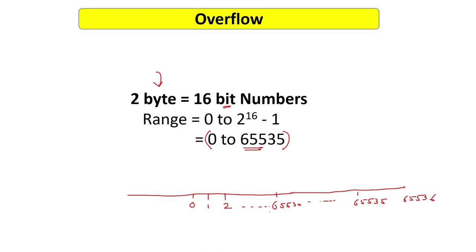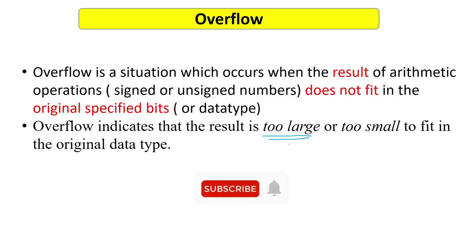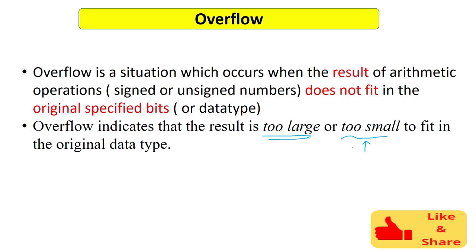The moral is: adding two large unsigned numbers can produce overflow if the result exceeds the representable range. For example, 65535 + 65534 overflows the 16-bit range. But 1+2=3 fits fine. The result being 'too large' is the overflow concept for unsigned numbers. The 'too small' concept applies to signed numbers, which will be covered in the next video. Thank you.